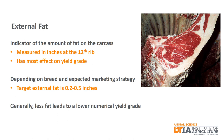Depending on the breed and expected marketing strategy, the target external fat thickness is 0.2 to 0.5 inches. Generally, the leaner the carcass, the lower the numerical yield grade.